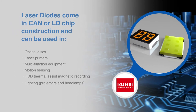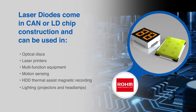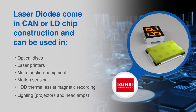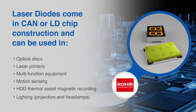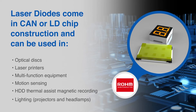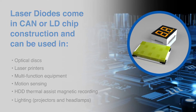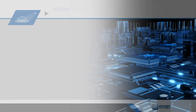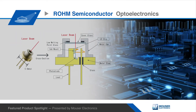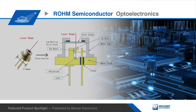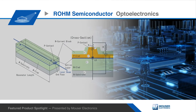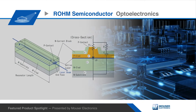These applications include optical discs, laser printers, multi-function equipment, motion sensing, HDD thermal assist magnetic recording, and lighting such as projectors and headlamps. The broad lineup of laser diodes can come in either a CAN package or LD chip construction.